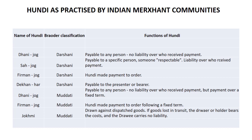Jokhami was another Muddati type. Under this, the Hundi was drawn against dispatched goods. If goods were lost in transit, the drawer or holder bore the cost, and the drawer carried no liability. So the drawer had no liability in case of loss during transit.